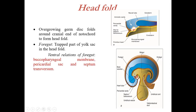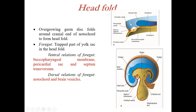The ventral relations of the foregut are: the buccopharyngeal membrane, which is the only bilaminar part; then the pericardial sac, which was lying ahead of it and because of the head fold has come to lie ventral to it; and also the septum transversum. The septum transversum is the connecting part of the somatopleuric mesoderm. The dorsal relations of the foregut are the notochord and the forebrain and midbrain vesicles. The cranial relation is the rapidly growing forebrain vesicles.